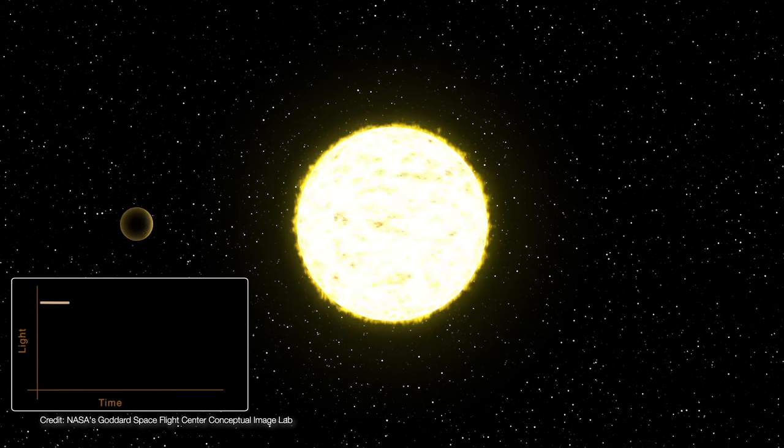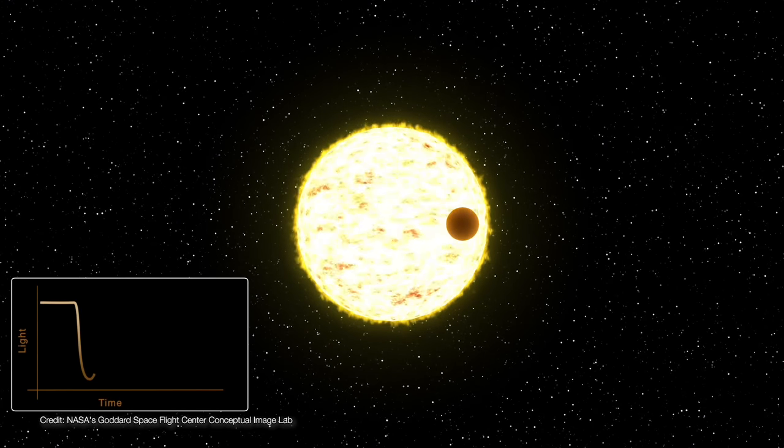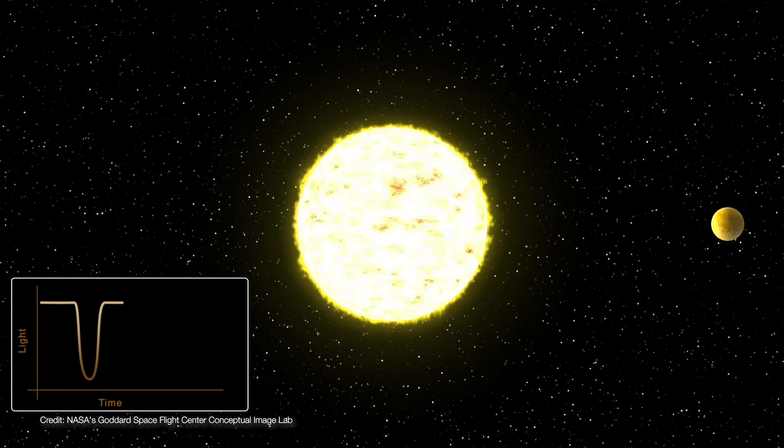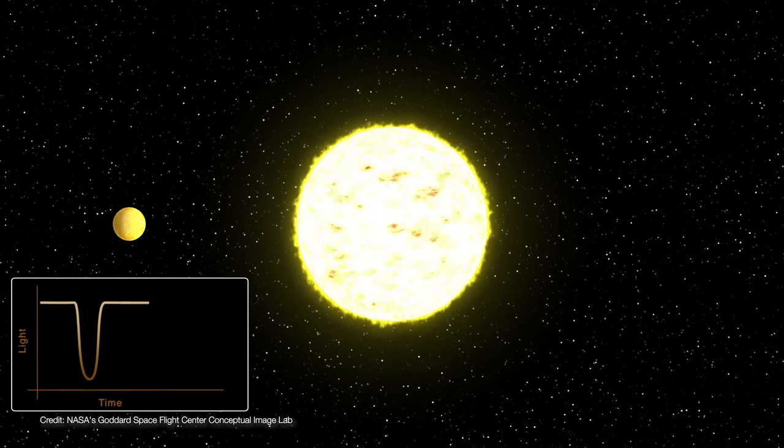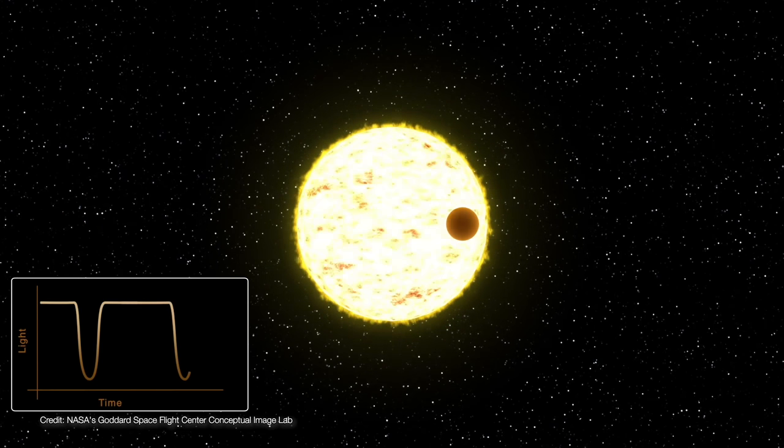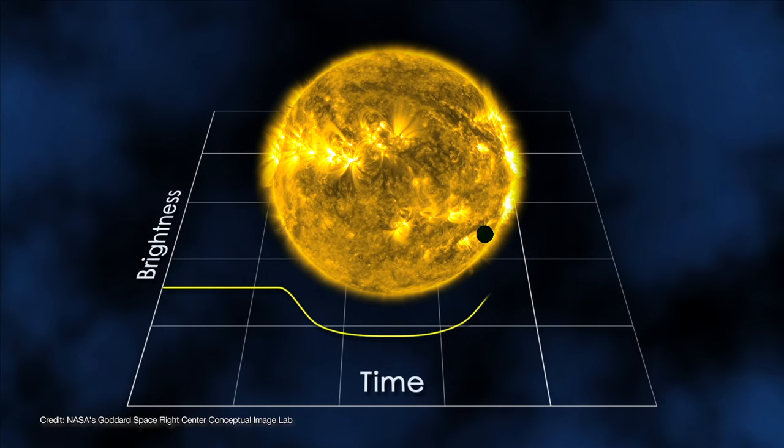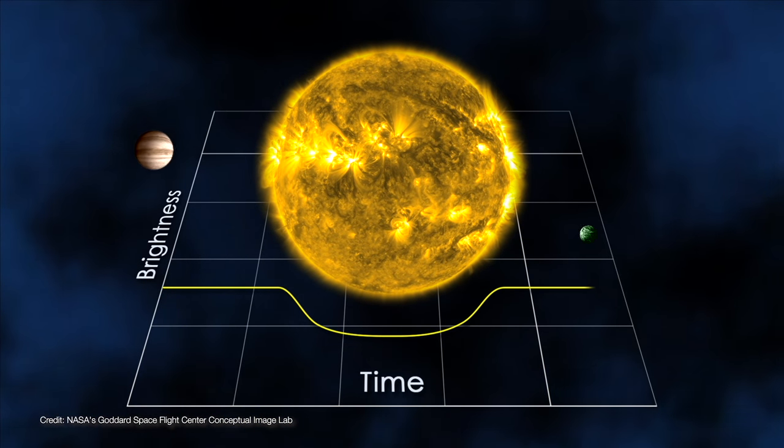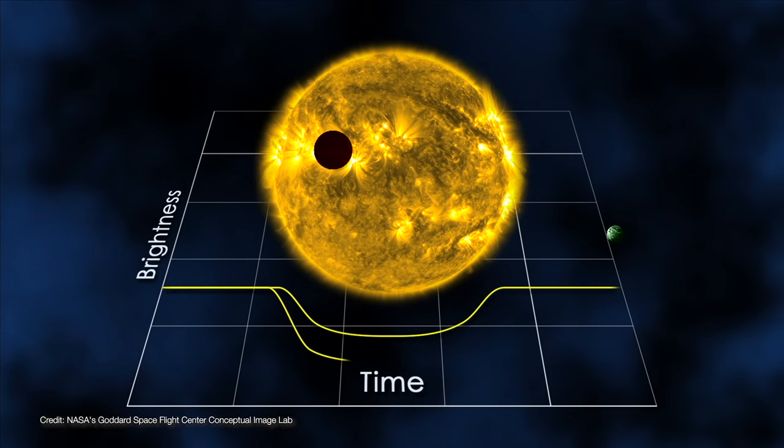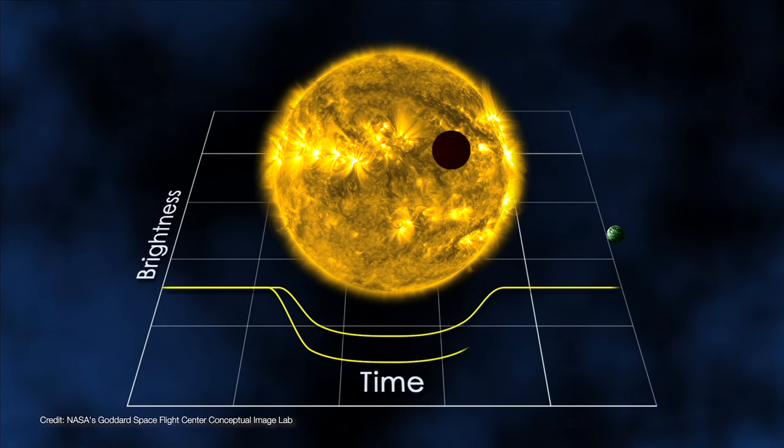Now TESS uses the transit method to detect planets around other stars. That means it watches for a repeating drop-off of light caused by a planet making a regular periodic orbit around the star. Not only that, but the larger the drop-off in light, the larger the planet must be. So astronomers can measure things such as a planet's orbital period, its distance from its host star, and even its radius.